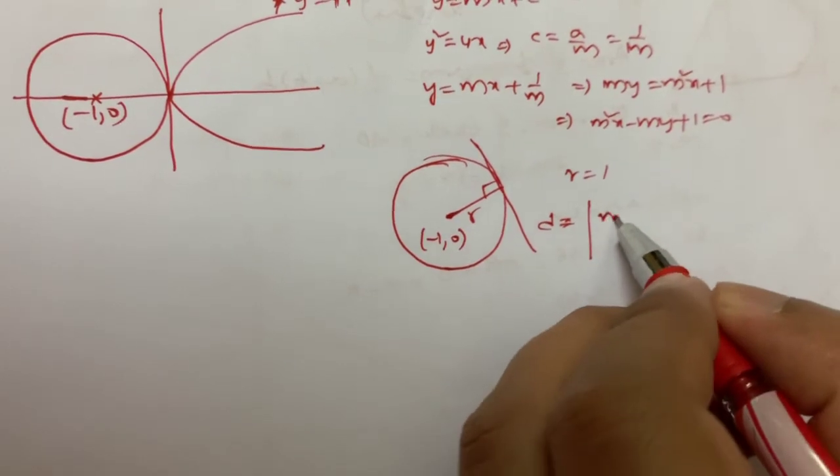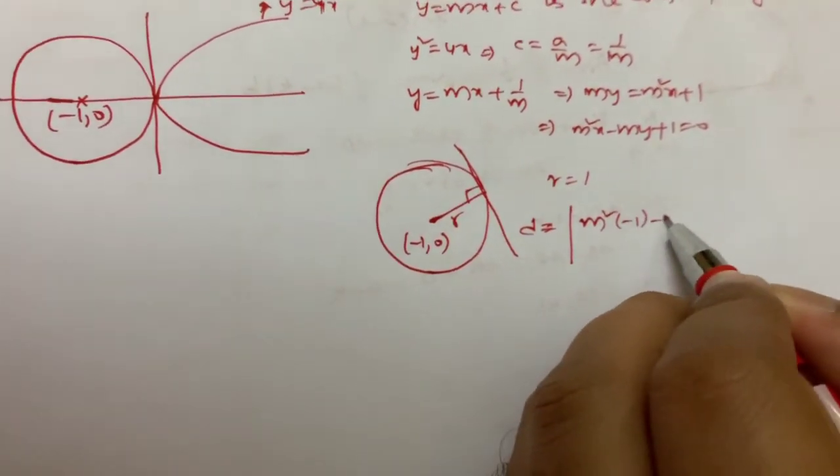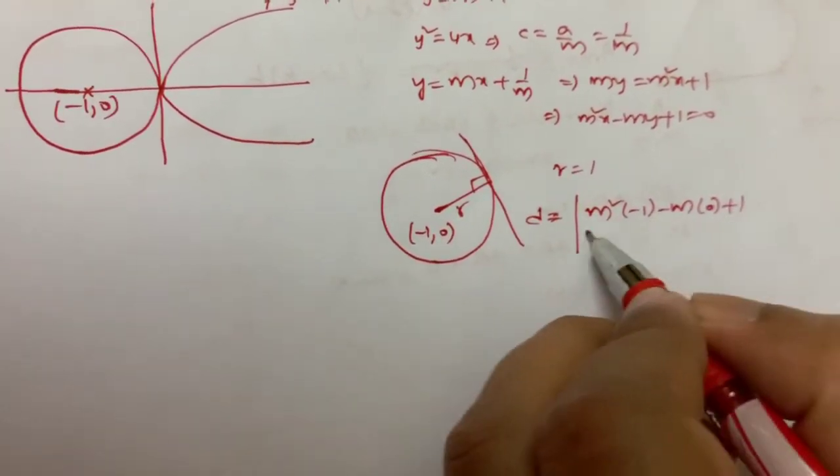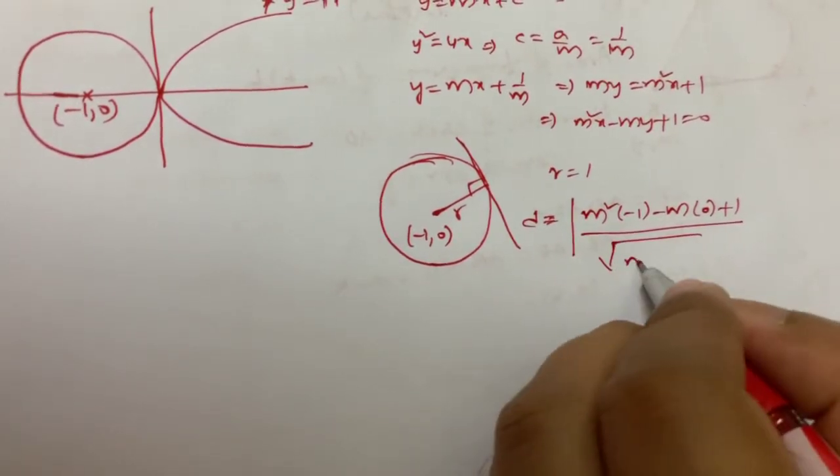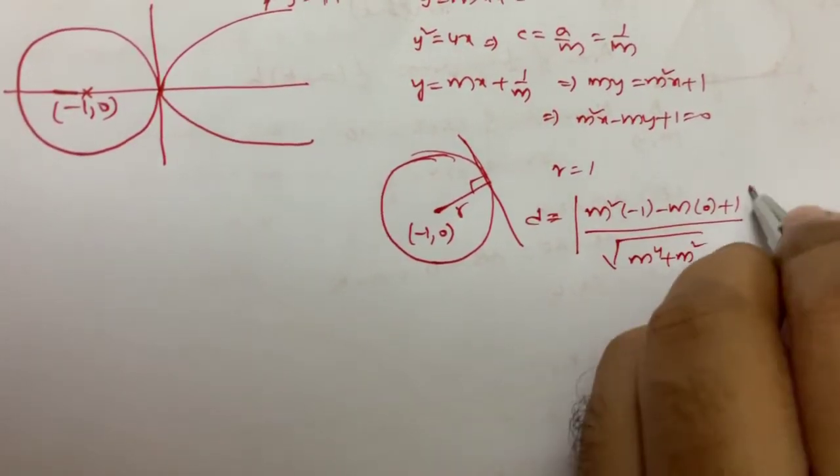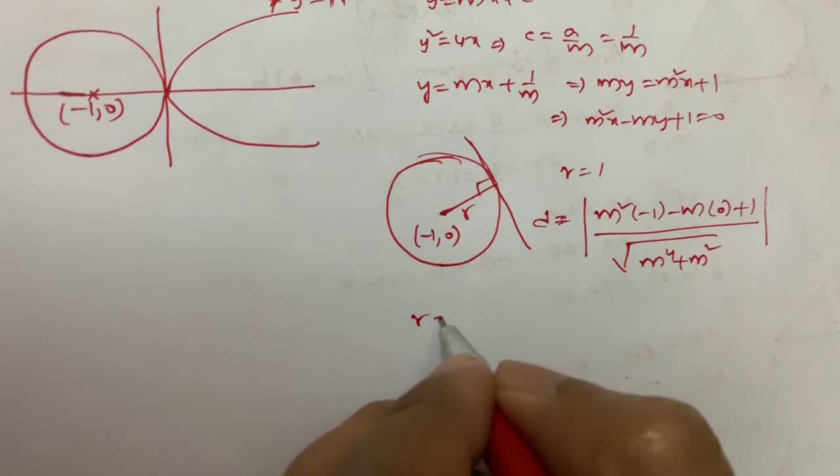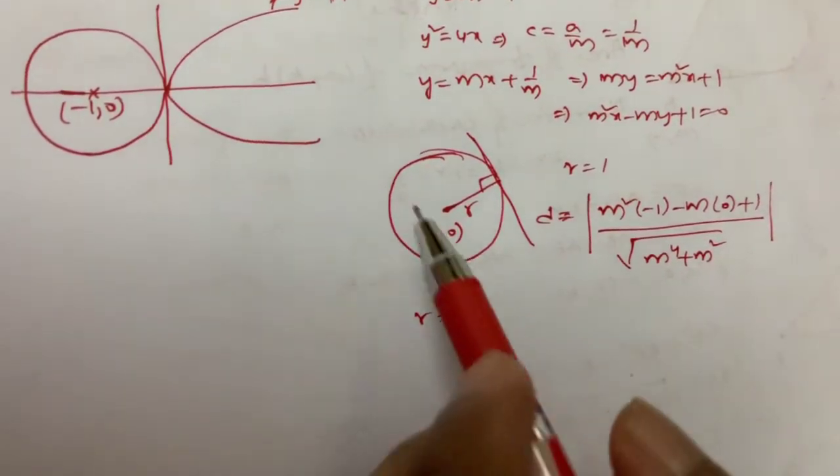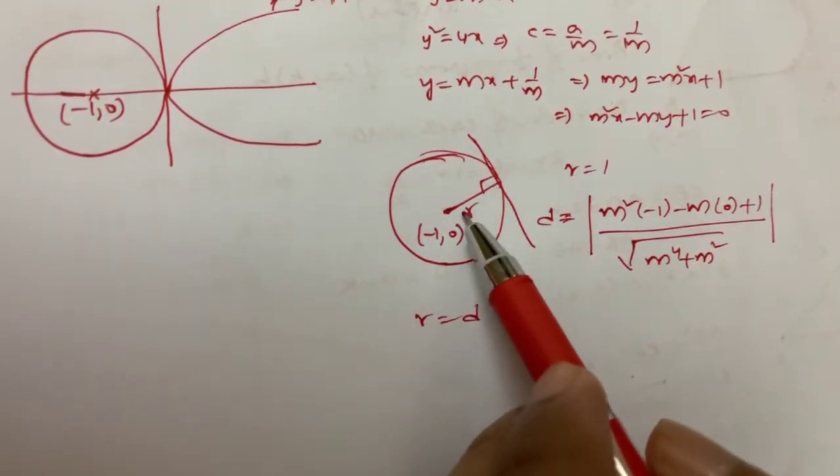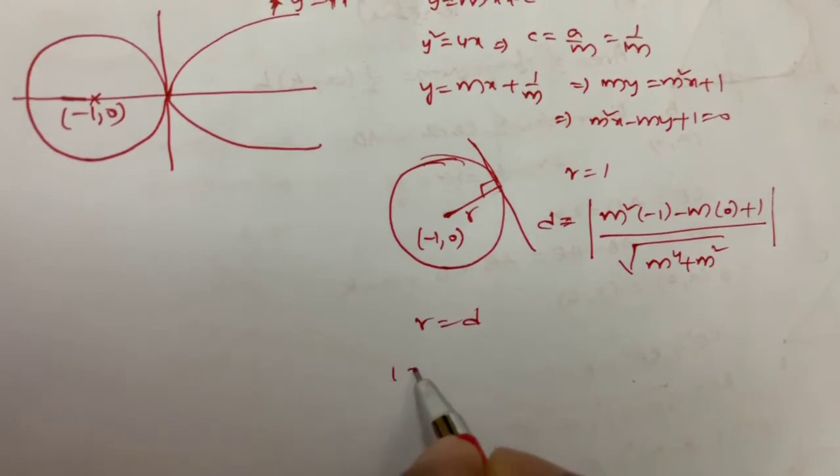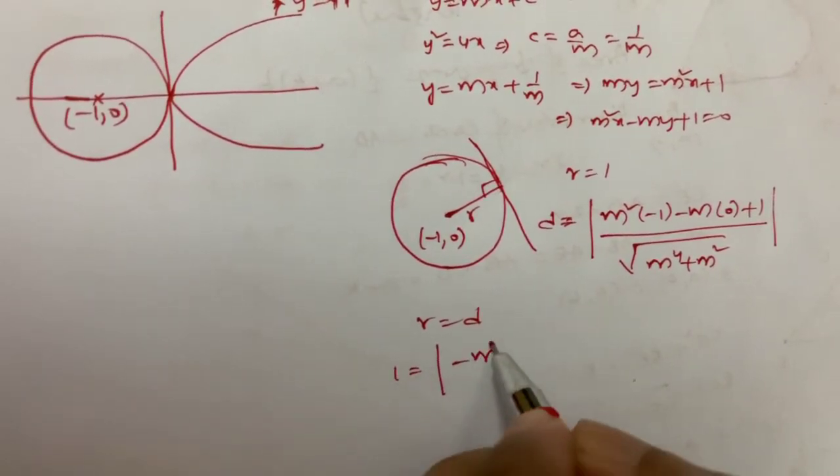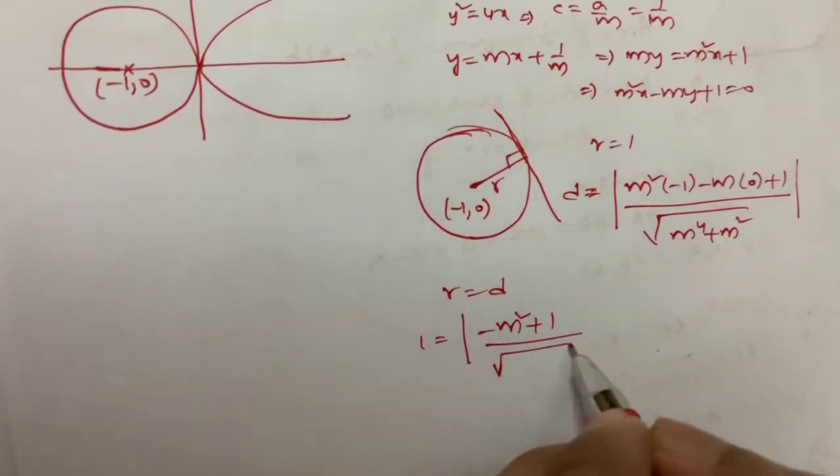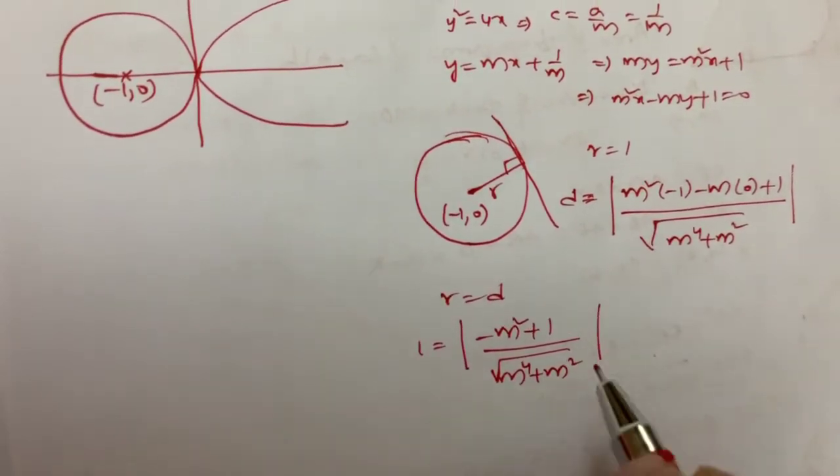So if I use that, it is [m²(-1) - m(0) + 1] / √(m⁴ + m²). So r should be equal to d. Perpendicular distance from center should be equal to the radius of the circle. So 1 = (-m² + 1) / √(m⁴ + m²).